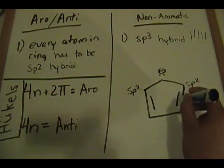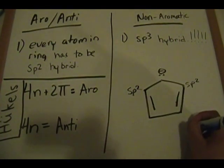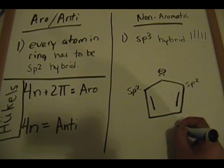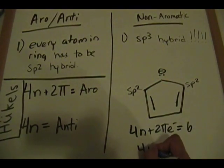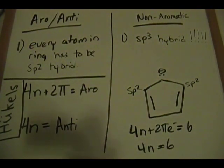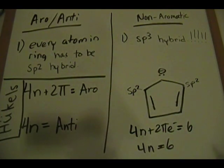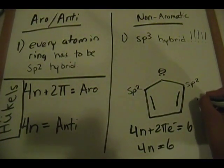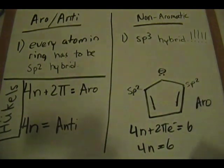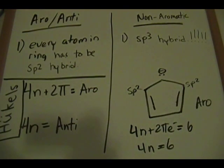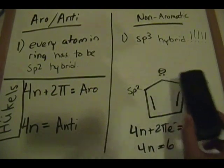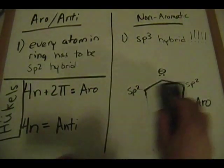Counting the pi electrons: 2, 4, 6 — six pi electrons including the lone pair. Setting 4n + 2 = 6, we get n = 1, which is a whole number. From our benzene example we know six pi electrons satisfies Hückel's rule, so this five-membered ring with a lone pair is also aromatic. When you have lone pairs on a ring atom, be careful — that lone pair contributes to the pi electron count and the atom is sp2 hybridized.